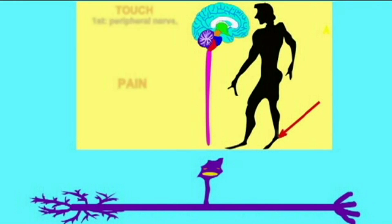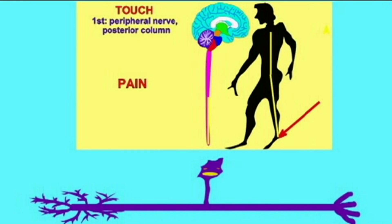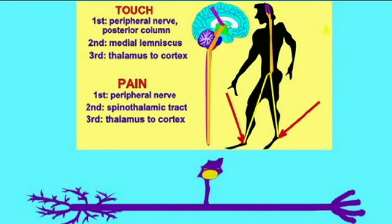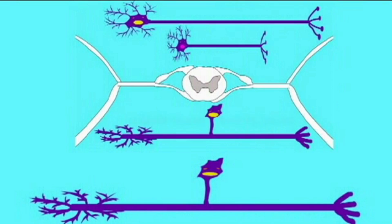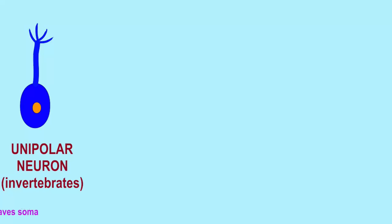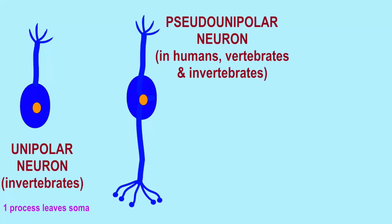Sensory neurons are often referred to as unipolar because they have one process extending from the soma, although they are more accurately called pseudo-unipolar — unlike the unipolar neurons of invertebrates — because they begin as bipolar neurons and then change.